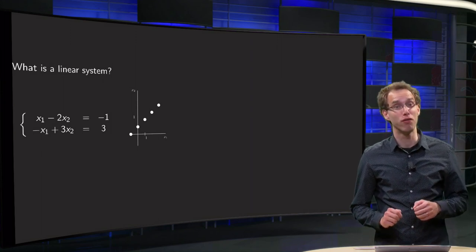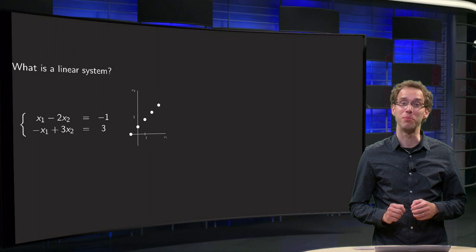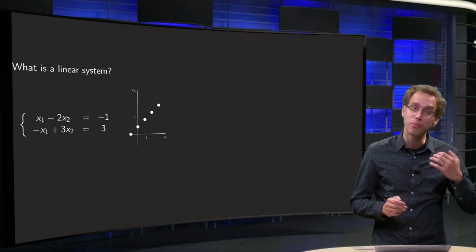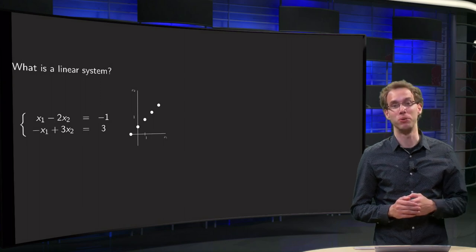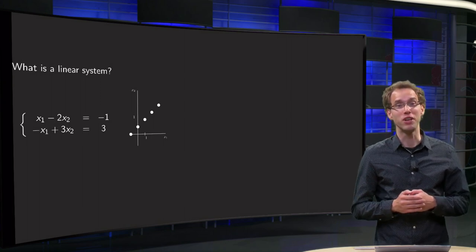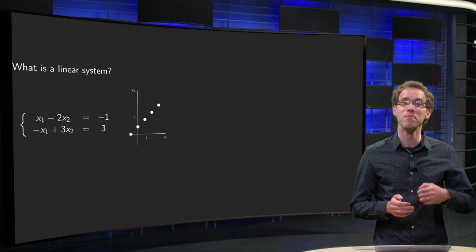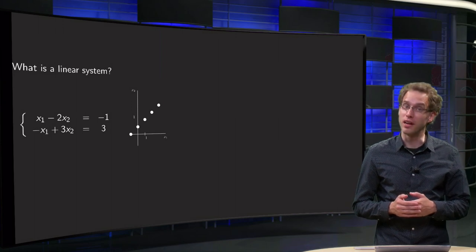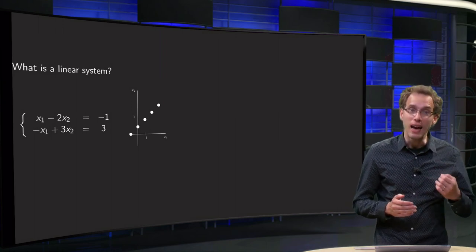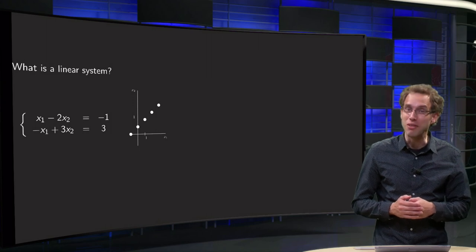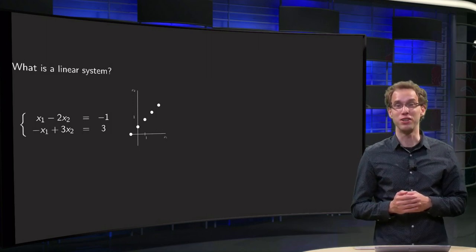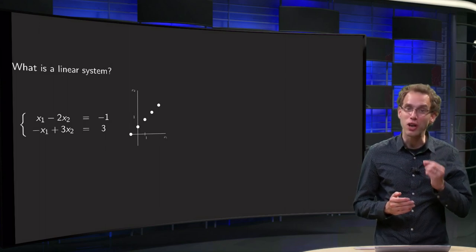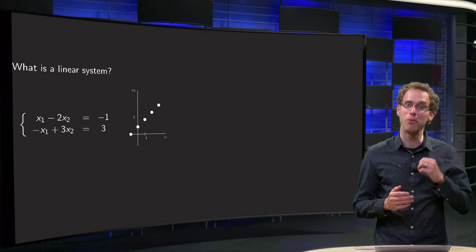In linear algebra we can often approach problems both from an algebraic point of view, say with variables and equations, and from a more geometric point of view. Those two viewpoints can often help each other. We can see, for example, how planes are lying with respect to each other using the underlying equations, using their normals. In this video we'll do it the other way around: the geometric view on a linear system will tell us something about the solutions of this system, even before we start to solve it.